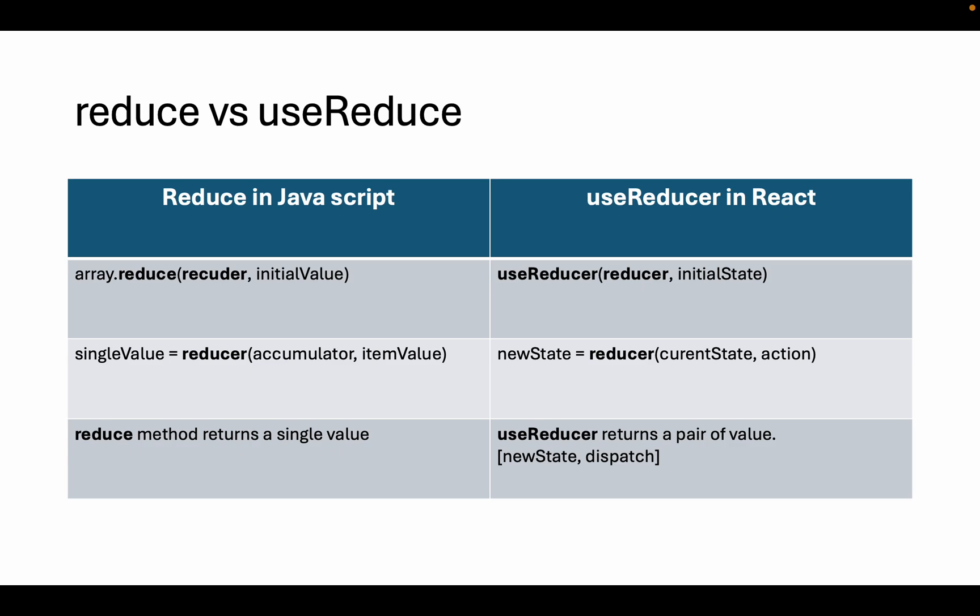The key difference is that the vanilla reduce method returns a single value, whereas the useReducer hook returns a pair of values: one is the new state, and the other is the dispatch method.